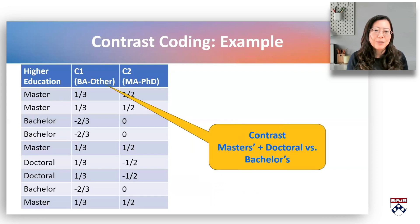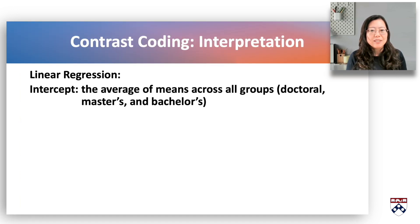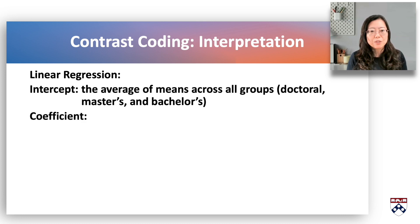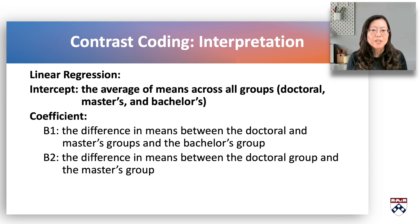C1 contrasts the master's and doctoral groups with the mean of the bachelor's group in the regression equation. Similarly, C2 contrasts the doctoral group with the mean of the master's group. In linear regression, the intercept is the average mean across all groups including doctoral, master's, and bachelor's. The coefficient equals the difference between the mean of the two contrasted groups. For example, beta one is the difference in means between the doctoral and master's groups and the bachelor's group. Beta two is the difference in means between the doctoral group and the master's group.